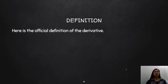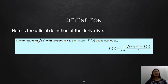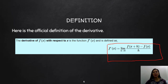The official definition of a derivative: the derivative of f(x) with respect to x is the function f′(x), defined as f′(x) equals the limit of f(x+h) minus f(x), all over h, as h approaches 0. This is the basis on how we calculate the derivative of a certain function.